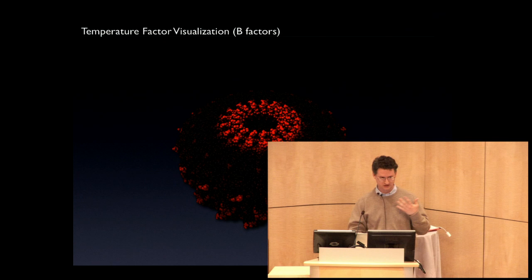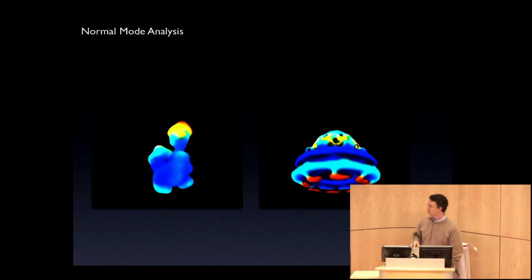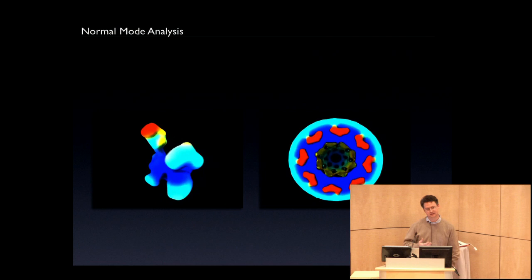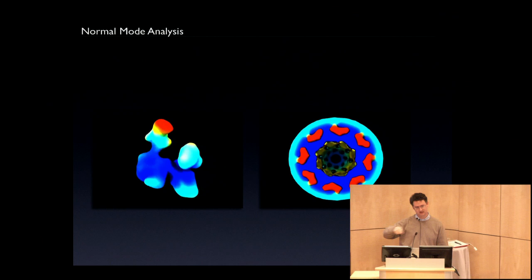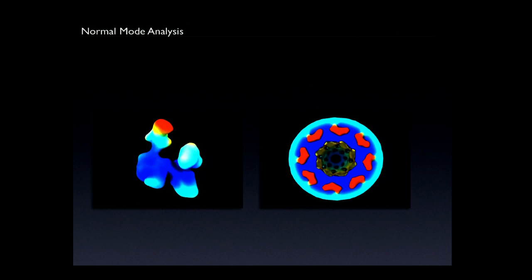Another area we've been integrating within Molecular Maya with Marc Bathe's lab is normal mode analysis. We're just about there: you bring in a structure, mesh it, click a button, and it sends that mesh to Marc's server. Using the finite element method, it calculates the 100 first normal modes, sends the data back within Molecular Maya, layers and weights them properly, and produces a normal mode movie with an RMSF map giving an indication of where the flexibility regions are.